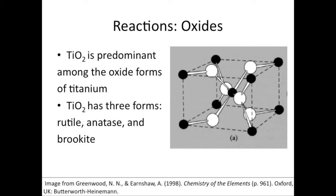Titanium dioxide is predominant among the oxide forms of titanium. It has three forms, namely, rutile, anatase, and brookite. Rutile is the most common of them.